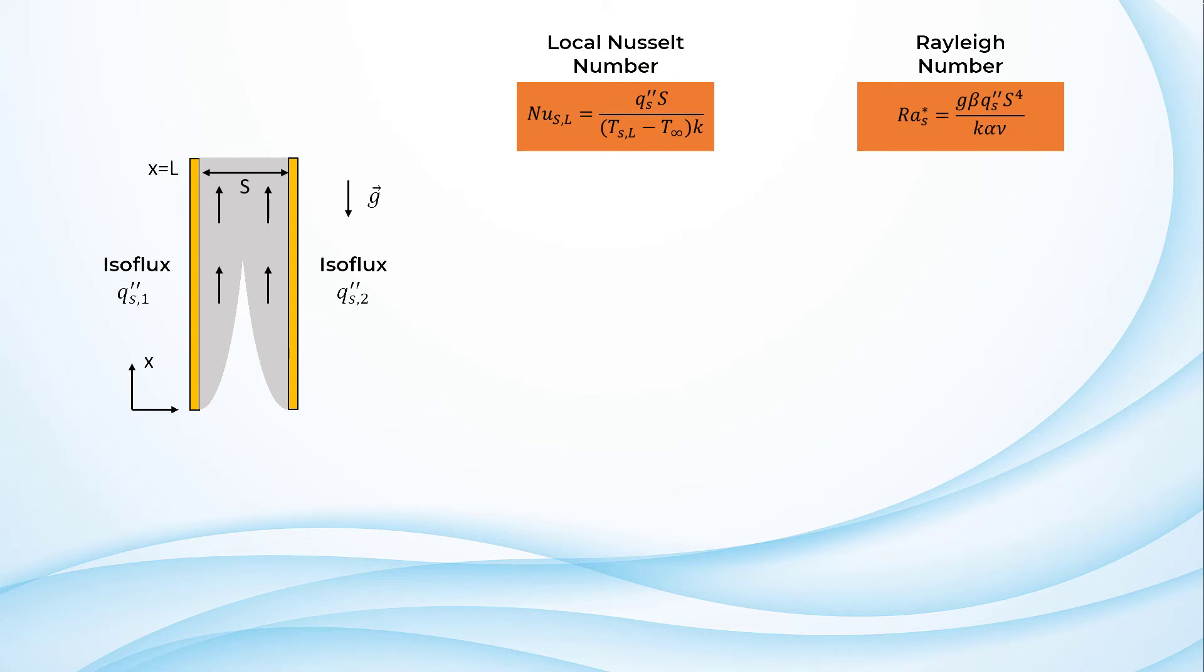Tsl refers to the plate temperature at x is equal to L, where the temperature is maximum. For symmetric conditions, i.e., Qs1 is equal to Qs2, the fully developed limit is given by the following correlation.